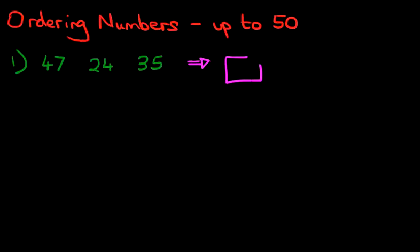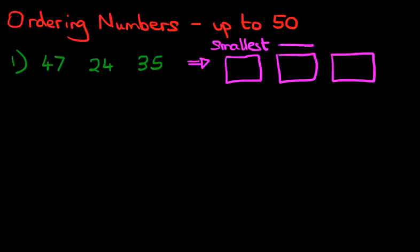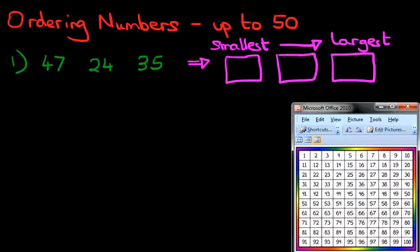Now, let's just write these three boxes down. You'll see these very often in workbooks or at school. Here is the smallest number, and we're going to do smallest to largest. Now, how are we going to do this? Well, let's have a look at our number grid. There it is, from numbers 1 to 100.